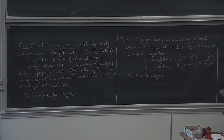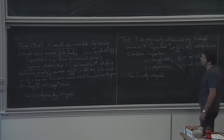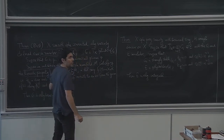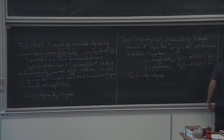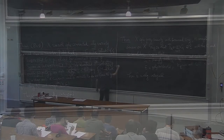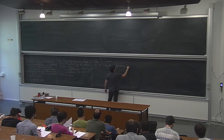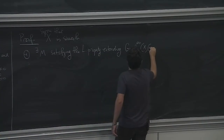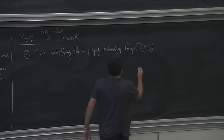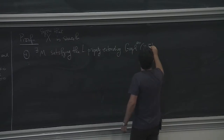Yesterday we started the proof. Let's continue. We will assume that X is smooth, just for simplicity. What we proved yesterday is that this M satisfying the Liouville property exists — there exists M satisfying the Liouville property, extending the analytic graph of your foliation, not G. This is E.